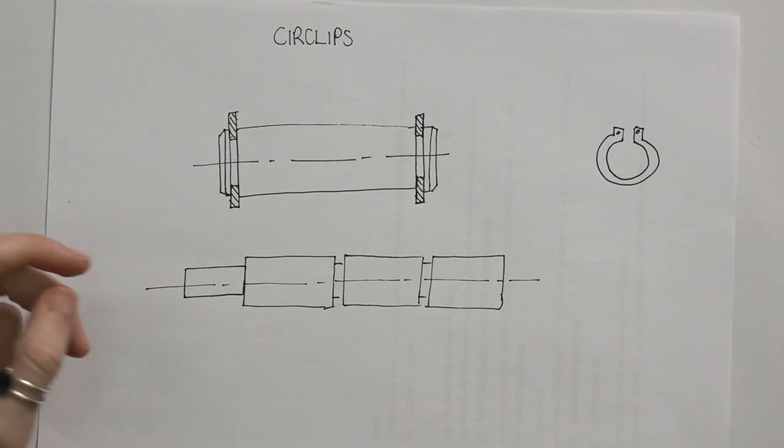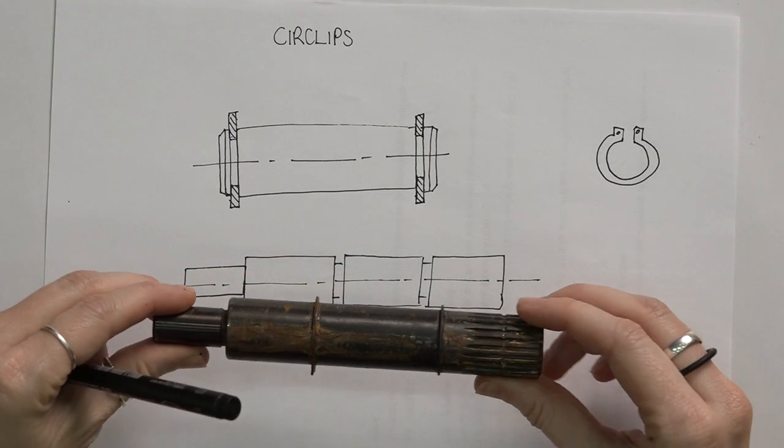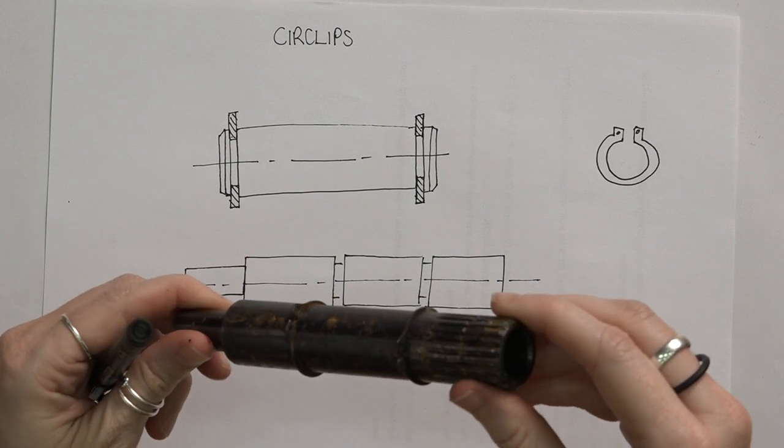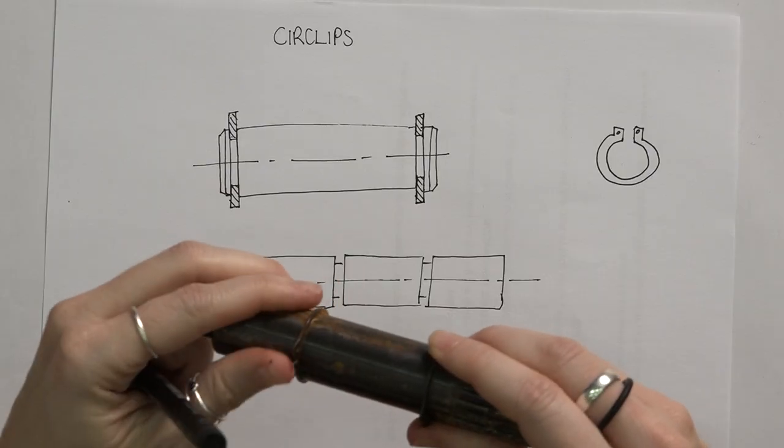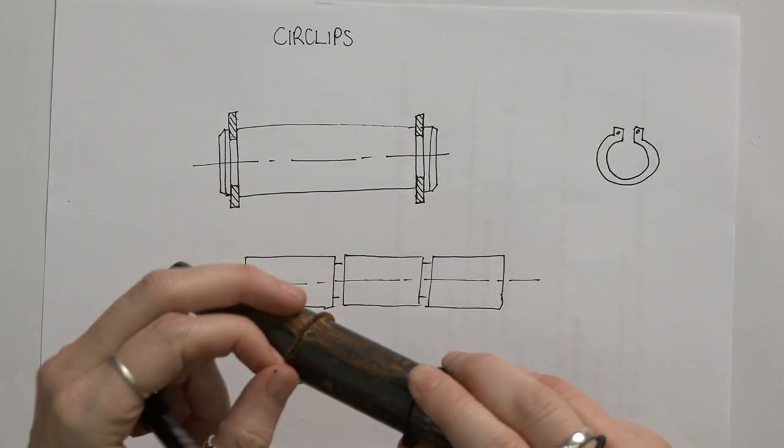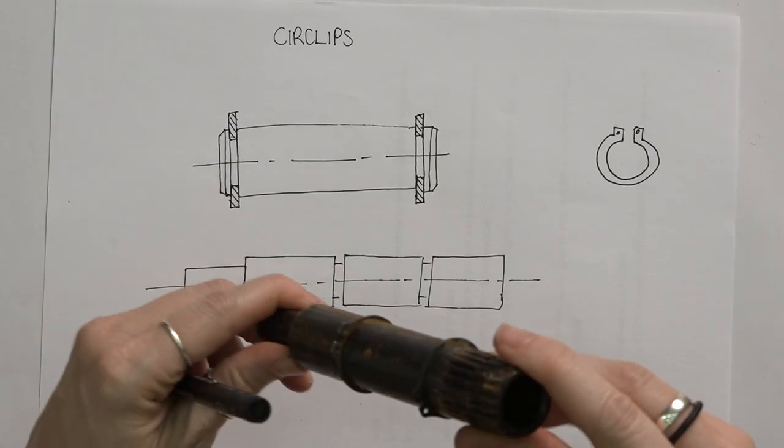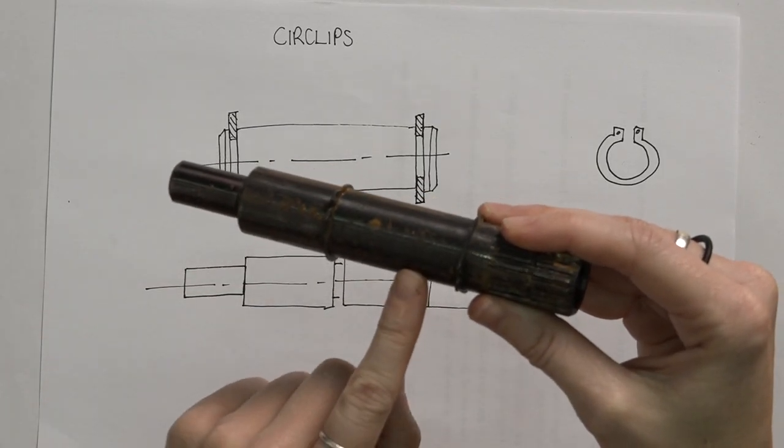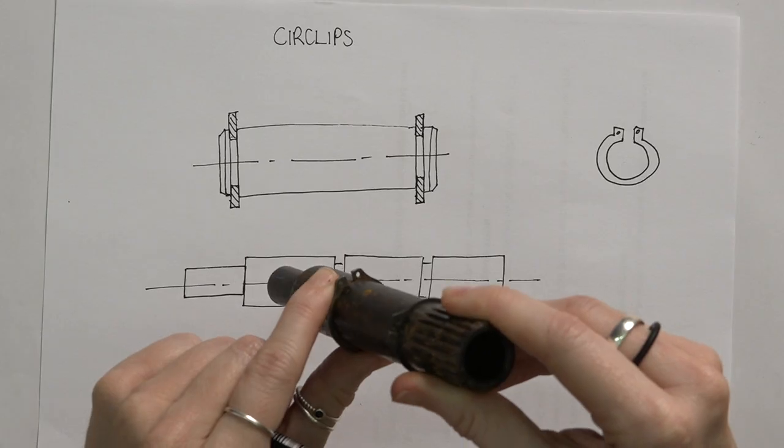Now there's other ways where you can have circlips. If we look at for example this component, we have circlips on this component and you can see it's in these little grooves and I can't open them by hand, they're quite tightly fit, you'll have to take them apart with a tool. But that's typically how we have them. So we'll assemble everything onto this part and then we'll add the circlips on either side.